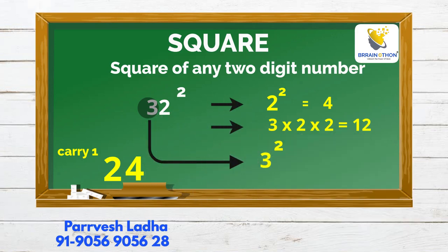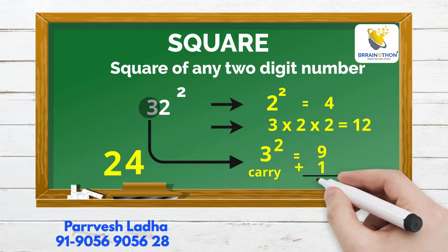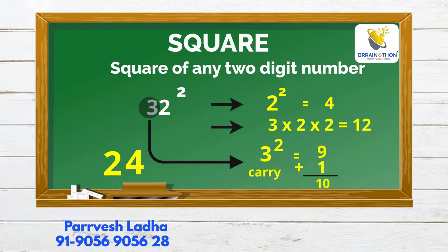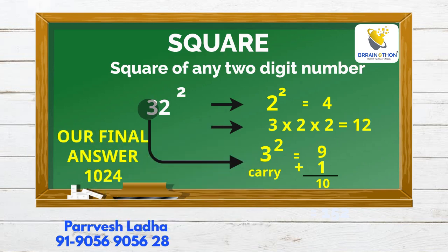We make the tens digit squared: 3-squared equals 9. We add the carry 1 and get 10. We write 10. Our final answer is 1024.